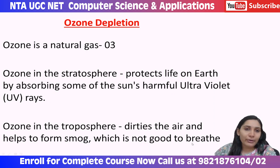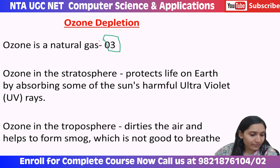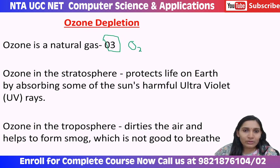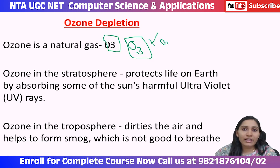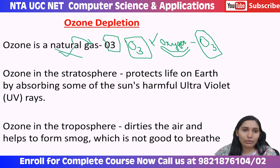The first issue we will discuss is ozone depletion. Ozone is a natural gas with the formula O3. Why is it called O3? Because ozone is formed with three molecules of oxygen. Oxygen has the chemical formula O, so three molecules of oxygen combine to form O3 — this is called ozone.